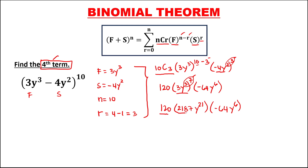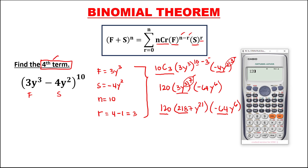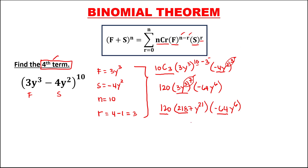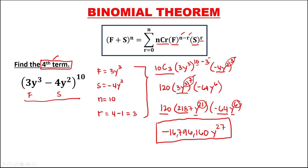Multiply these three numbers: 120 times 2,187 times negative 64 equals negative 16,796,160. Since it's the same variable y, add the two exponents: y to the power 27. So this is the fourth term for the expansion of this binomial.